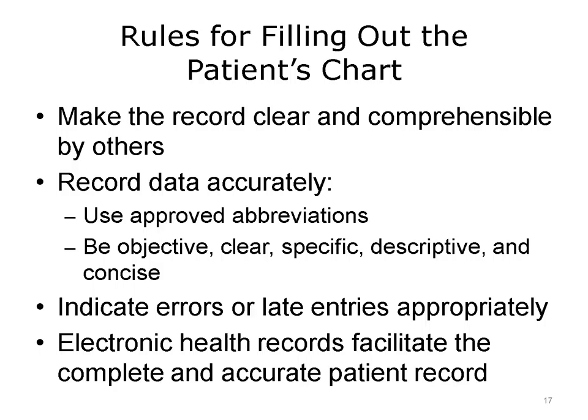Although electronic health record systems include numerous drop-down menu items, some fields are unstructured and allow providers to enter text. So that others can read the chart accurately, the nurse should use only approved and recognized medical abbreviations and symbols. Unless quoting someone, the nurse should not use slang. All entries should be objective, and the nurse should use details to support his or her interpretations. To prevent any unauthorized additions to the record, the nurse should draw a line through any blank lines or spaces in handwritten records. To correct the chart, the nurse should draw one line through an error, write the correct information, and date and initial the correction. Clinical systems should have a process by which to provide an addendum and corrections for the record.